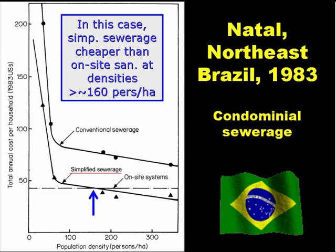But at a population density above about 160 people per hectare, simplified sewerage became, in this particular case, cheaper than on-site sanitation systems. This is really a very important finding, and it leads us to the conclusion that in high-density, low-income peri-urban areas, which we find all over the developing world, simplified sewerage is most likely to be the sanitation technology of first choice.